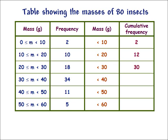30 insects weigh less than 30 grams, which is 2 plus 10 plus 18, the insects in the first three classes. Or, we can just add the 18 onto our current subtotal of 12. The table continues in the same way.